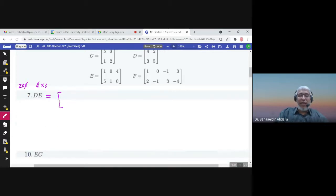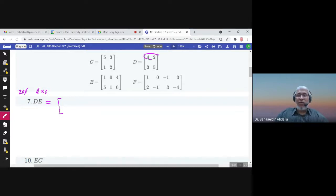So multiply D by E. The first row of D by the first column of E: 4 times 1 plus 2 times 5, that's 14. Then the first row of D by the second column, that's 2. Then the first row by the third column, that's 16. Now we multiply the second row of D by the first column of E: 3 times 1 plus 5 times 5, that's 28. 3 times 0 plus 5 times 1, that's 5. 3 times 4 plus 5 times 0, that's 12. So these are the entries of the matrix DE.